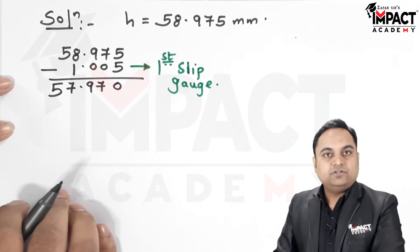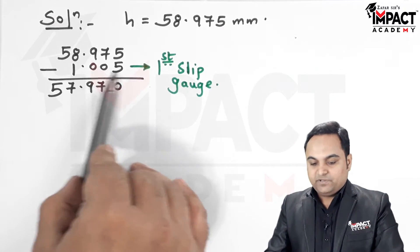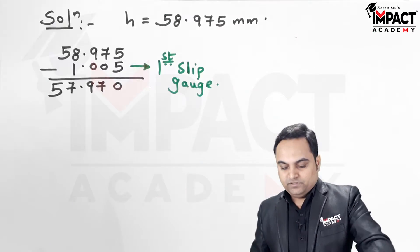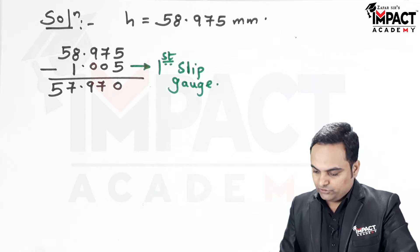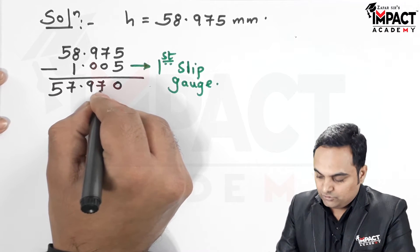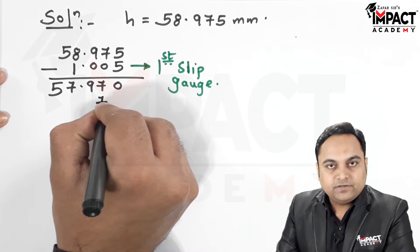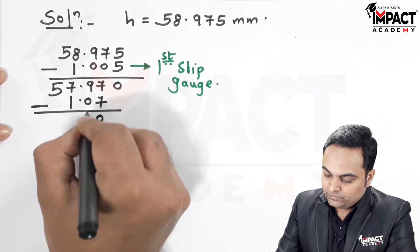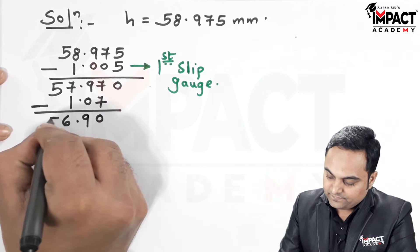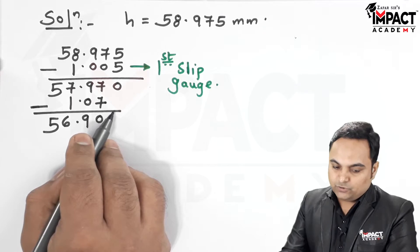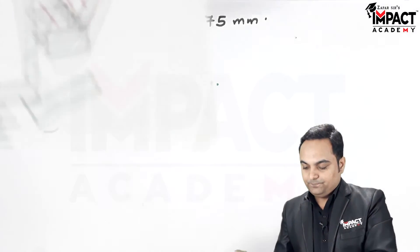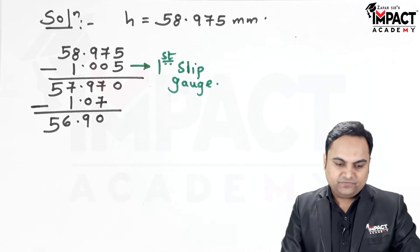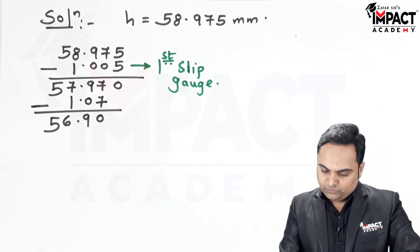We verify 1.005 is in the set — it is in the single-piece range, so it's accepted. Next, from 57.97, we try to eliminate the last decimal digit 7 by subtracting 1.07. That gives 56.9, and 1.07 is in the second range (1.01 to 1.49), so it is also accepted as the second slip gauge.